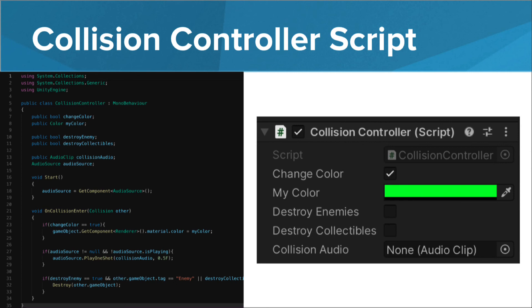destroy a game object tagged as an enemy or collectible, or you can even add an audio clip that plays upon the collision. This script is added to the player game object in your game scene.